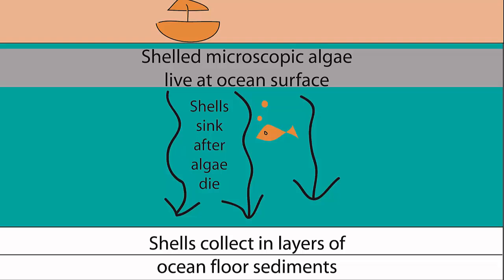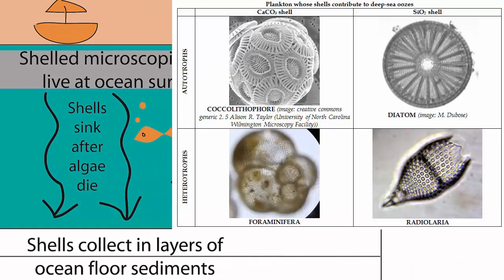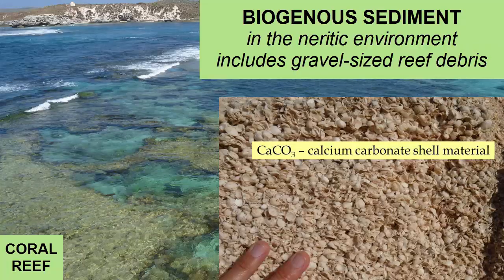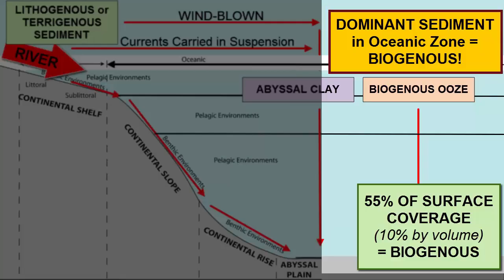The most important contributors to biogenous sediment are the single-celled autotrophic and heterotrophic plankton that live in the surface waters. Billions of these organisms live and die with lifetimes of days to weeks. Their shells collect on the bottom of the seafloor and contribute to siliceous and calcareous oozes, depending upon whether the shells are made of silica (siliceous oozes) or calcium carbonate (calcareous oozes). The term ooze tells us the consistency: they are all mud-sized, a very fine, flour-like material. Larger gravel-sized shells contribute to neritic nearshore sediments where there are large reefs, either tropical coral reefs or colder water reefs made of mollusks like mussels and limpets.